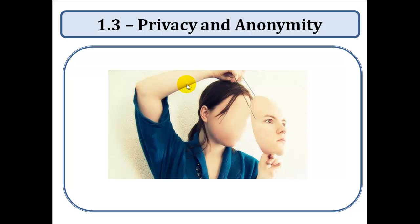Number three is privacy and anonymity. Privacy is the ability to control how data about us is used. This can include deciding who we give our data to, how we share our data, how long the data is stored and how the data is used.